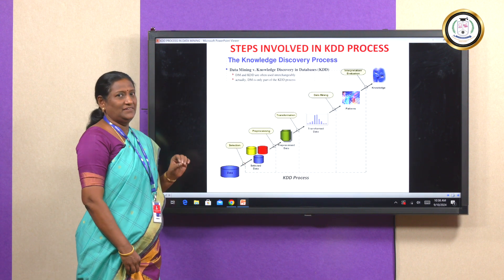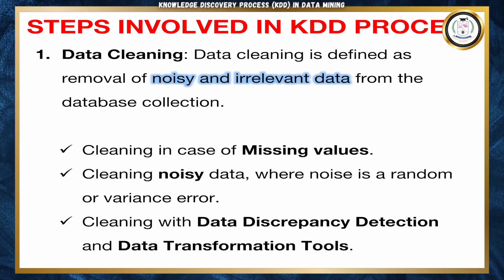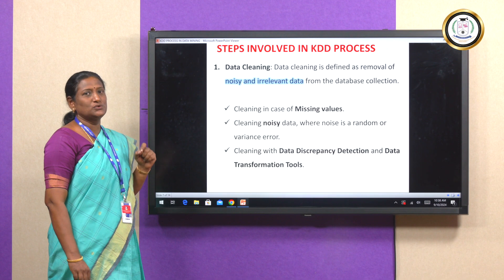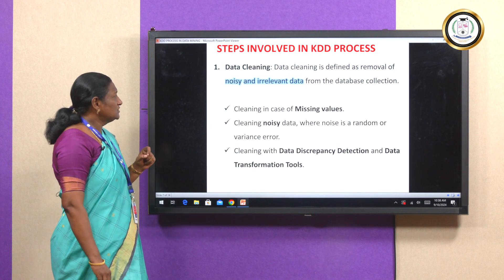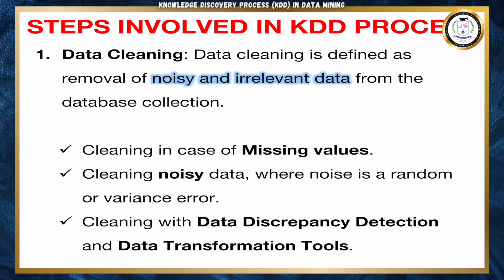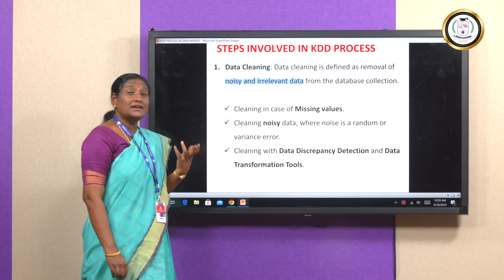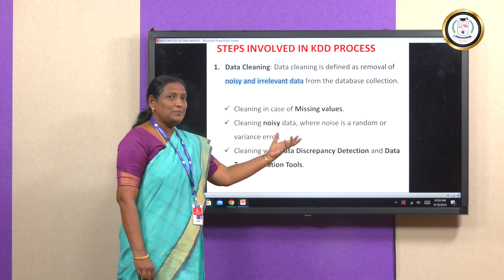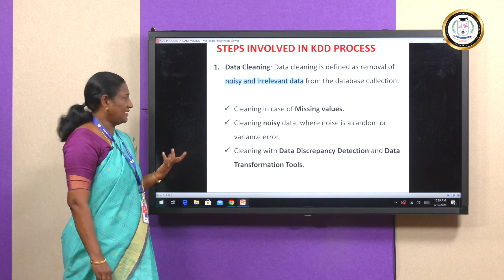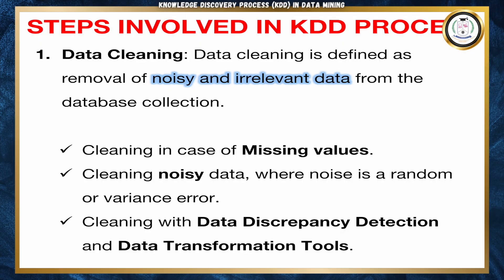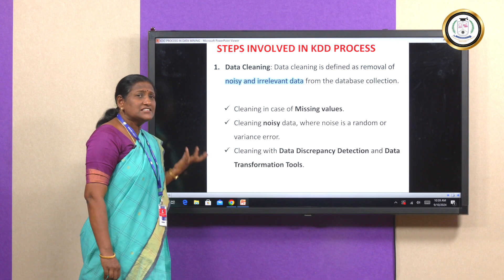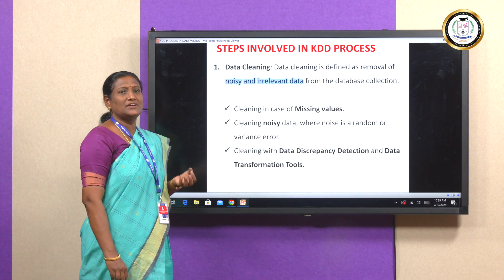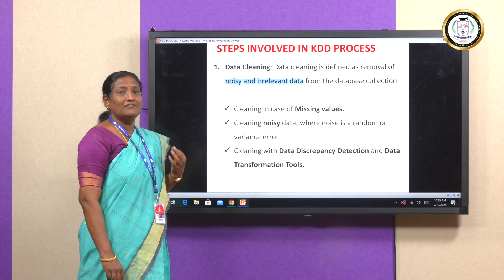Let us discuss each step in detail. The first step is data cleaning, defined as the removal of noisy, irrelevant, or unnecessary data from the database. Data cleaning also involves handling missing values and removing noisy data, which can be random errors or variance errors. Cleaning is done using techniques such as data discrepancy detection and data transformation tools, resulting in clean, error-free data.